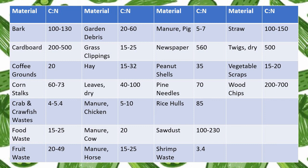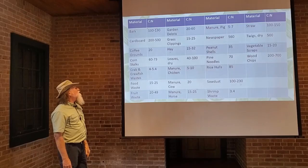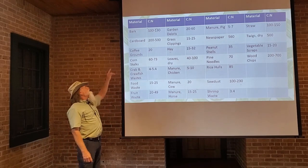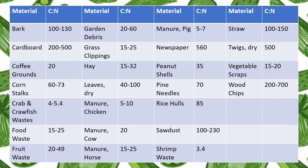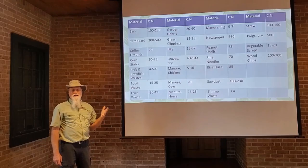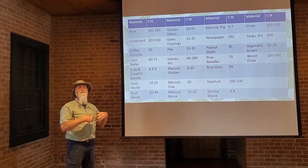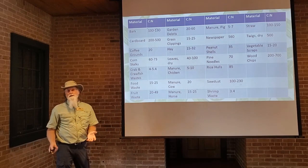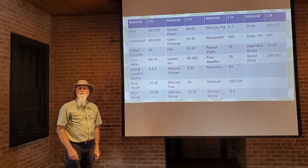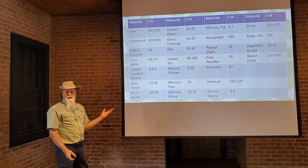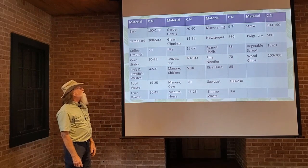To point out some quick ones: cardboard — that's one you're probably going to use in your compost pile — can be anywhere from 200:1 to 500:1 carbon-nitrogen ratio. Coffee grounds are a good green, because they have a 20:1 carbon-nitrogen ratio. Coffee grounds are actually great for a compost pile, and they're better put into your compost pile and let them go through the composting process before putting them into your garden — you get a lot more out of them that way.